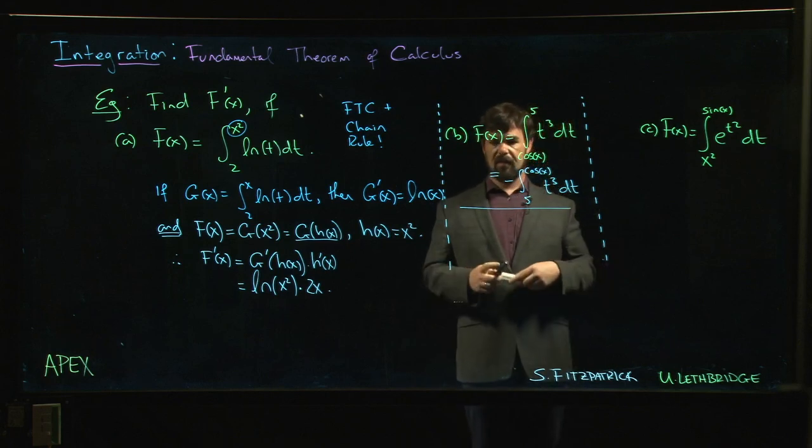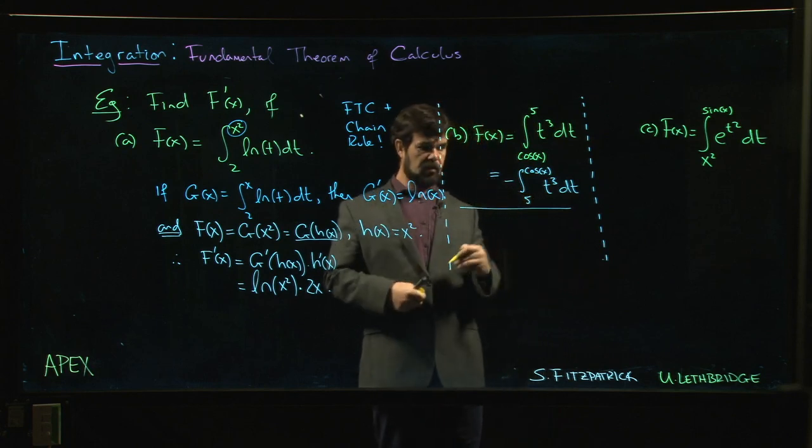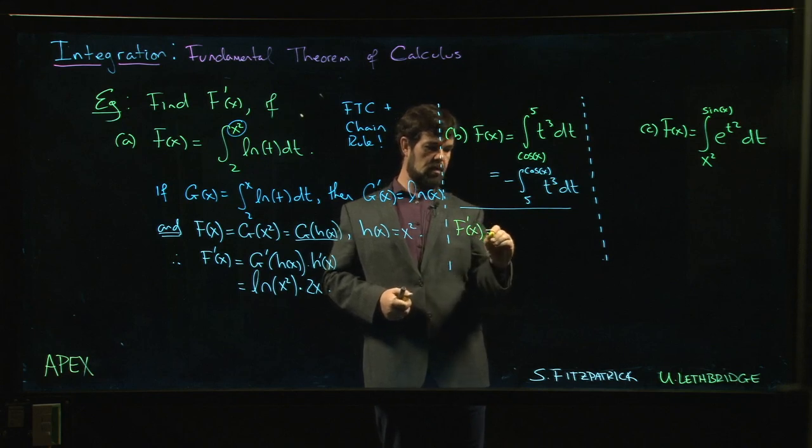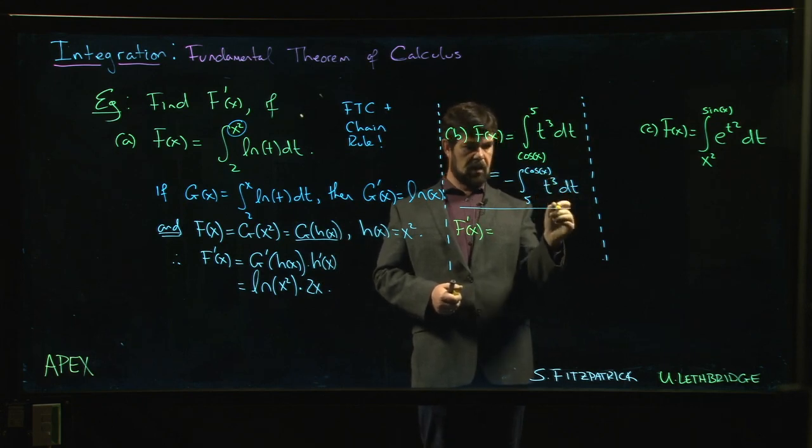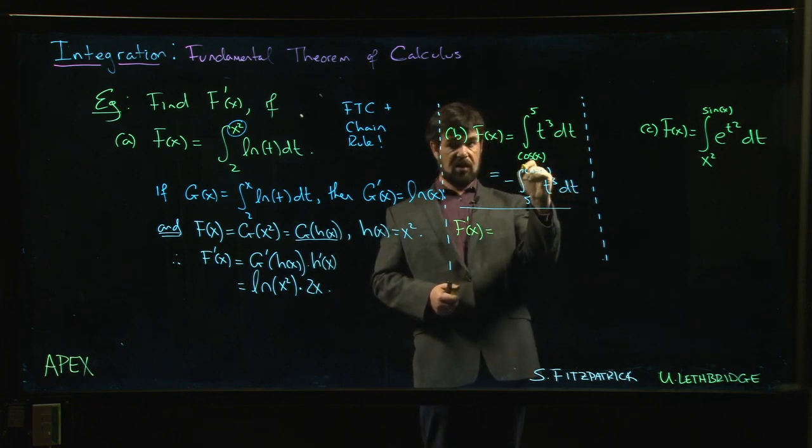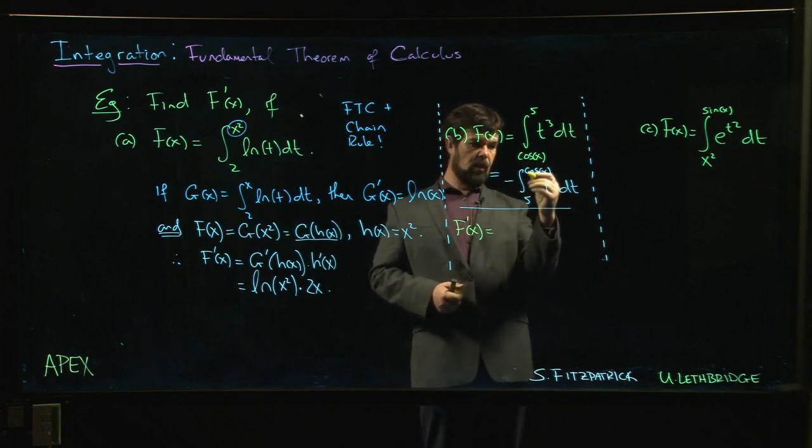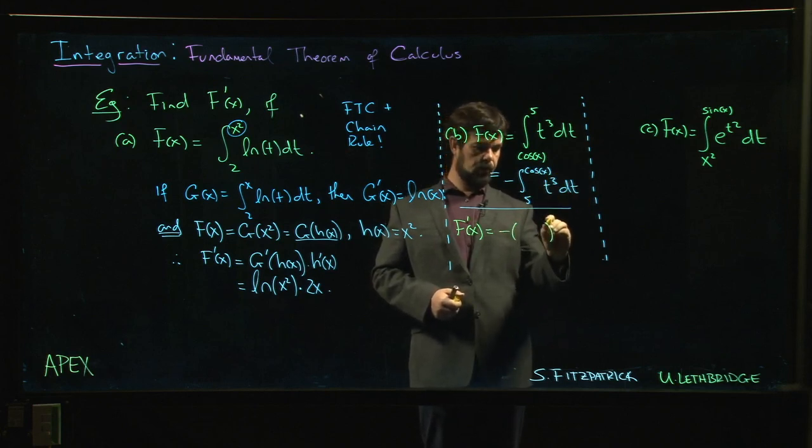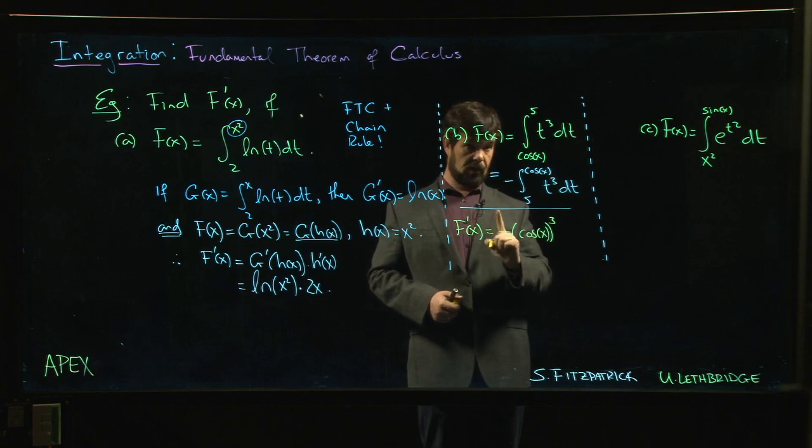Once you get the hang of it, you can do these just as fast as any other sort of chain rule problem. So what's f prime? The fundamental theorem of calculus says when you take the derivative of the integral from a to x of f(t) dt, you get f(x). Since we're going from a to cos x, we don't get f(x); we get f(cos x). And our function is this t cubed function. So we get cos x cubed plugged in, because you have cos x up there.